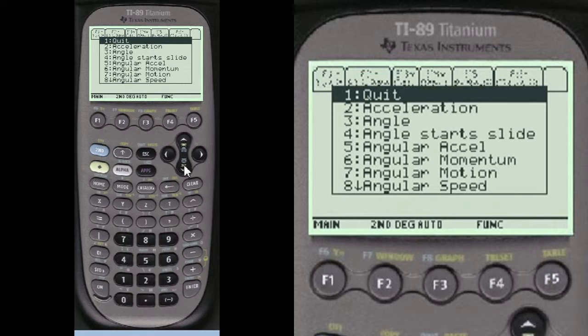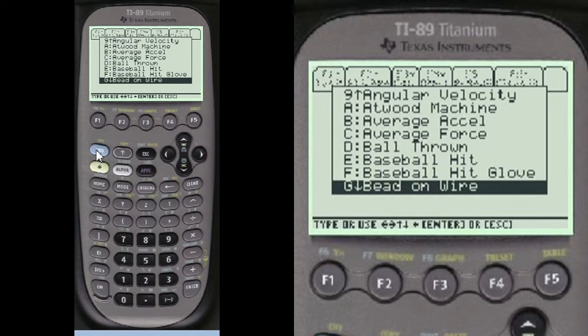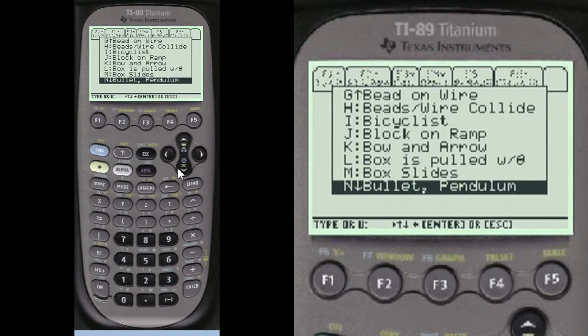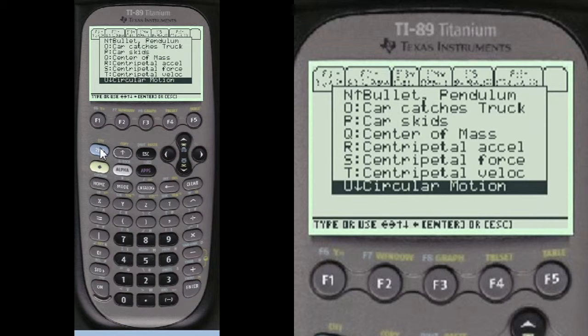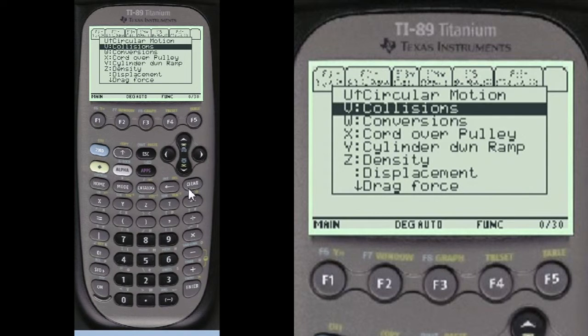I'm going to press 2nd and the cursor here so we can go down quickly down the menu to get to the C section where there is collisions. That's what we're looking for, because this problem is a collision, two men hitting together.